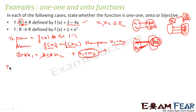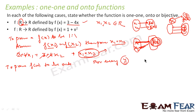To prove a function is onto, we must prove that for every y in R, there exists an x in R — because it is an R to R mapping.